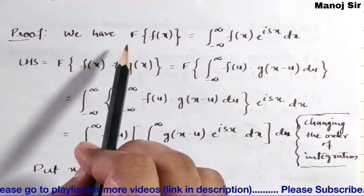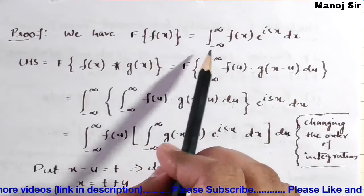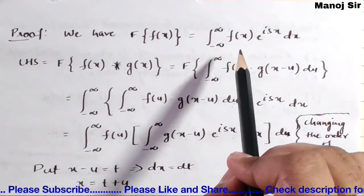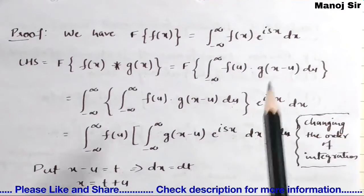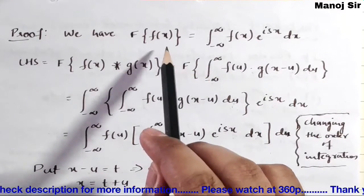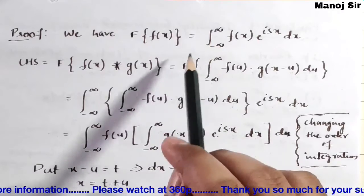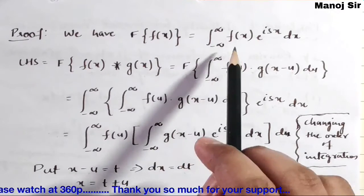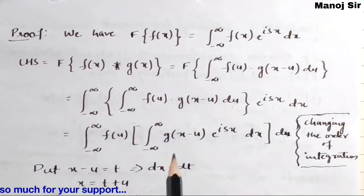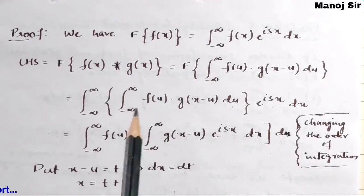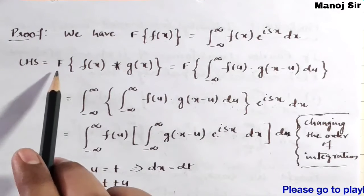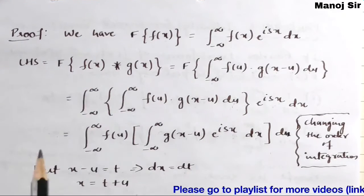We will start the proof. We have the Fourier transform formula: Fourier transform of f(x) equals integration from minus infinity to plus infinity of f(x) into e to the power isx dx. Now we will take the left hand side, that is, the Fourier transform of the convolution of f(x) and g(x).